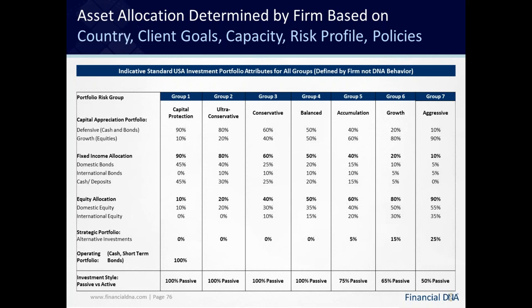Assuming a homogeneous model, this table works at a standard level. As we move up from the group four middle range balanced portfolio to group five, which is more accumulation and growth, there will be a higher proportion of equity allocation and potentially more alternatives. The investment style is also important — a more passive investment management approach, for example using exchange traded funds or ETFs, will generally be better and safer for group four and below. Those in groups five, six, and seven may wish to move away from a passively managed portfolio and get more active management, taking on more risk.